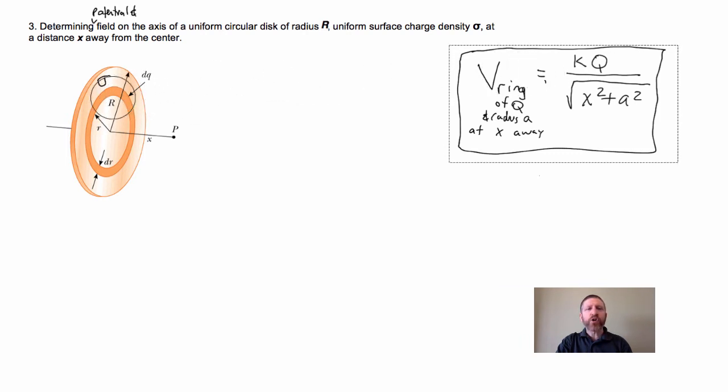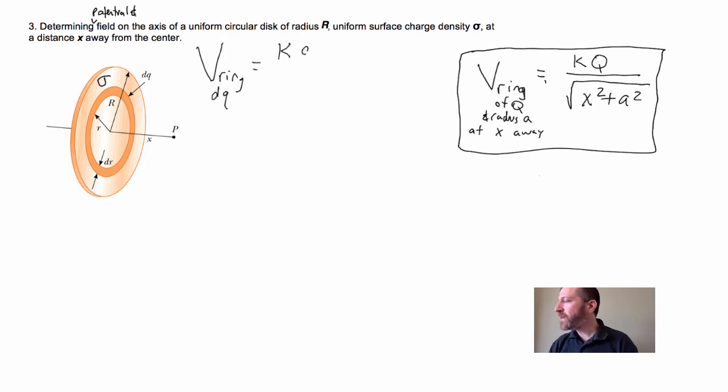...each ring will have charge DQ. So what we're going to do is first find the electric potential due to our ring DQ, and that's going to be the same thing as we have over here. It'll just be KDQ over the square root of, now we've got to be careful here, x is the same thing, x squared...